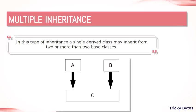In multiple inheritance, we have two base classes — say A and B — and class C inherits the properties of both A and B. So class C can use the core of both the two classes.